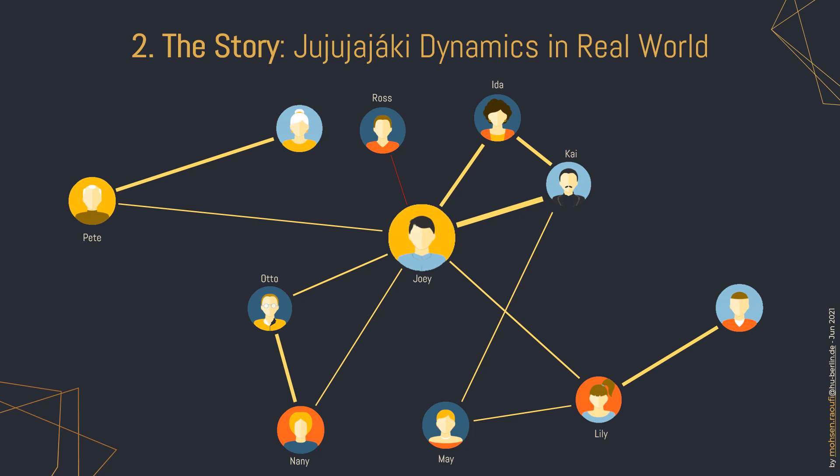In the meantime, other friends of Joey try to help him find new friends. So Kai introduced Mei to him. Now Joey and Mei are friends, and thanks to this new friendship, they meet Kai more often and their ties to Kai have increased. Note that Mei is also a friend of Lily, but because Joey is not as close to Lily as he is to Kai, there was a lower chance that Lily introduced Mei to him.